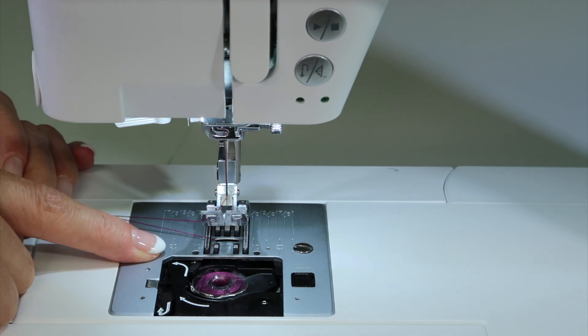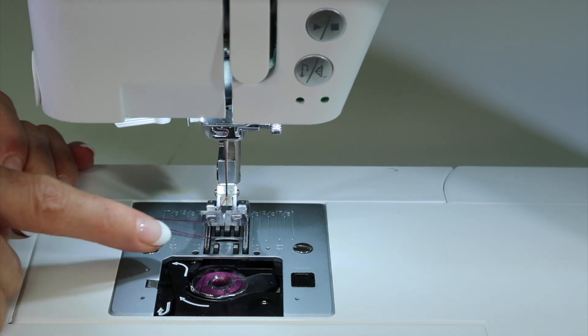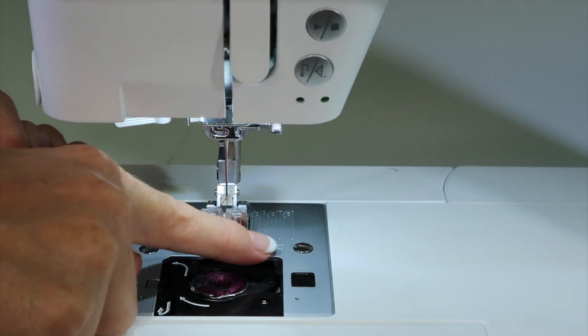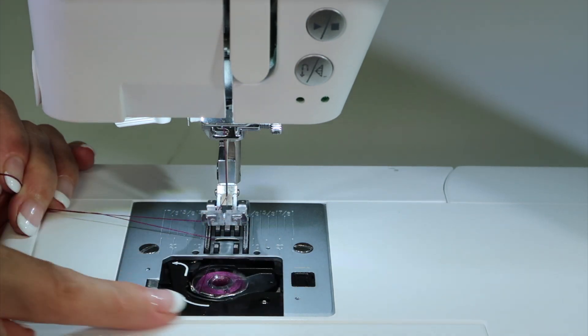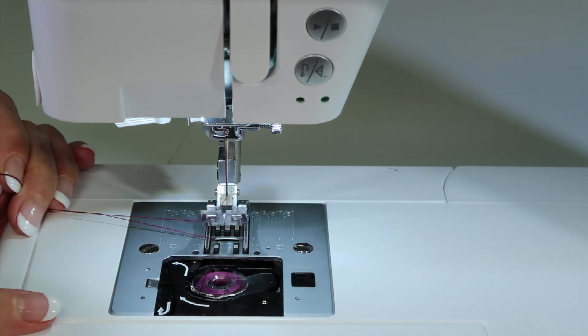That's another reason why you need to clean out about every three to five full bobbins of use. You're going to notice that underneath this throat plate is very linty. By seeing how much thread has to spin or cross over that whole area just for one stitch, it should give you a reminder of how much you need to take care of this machine.